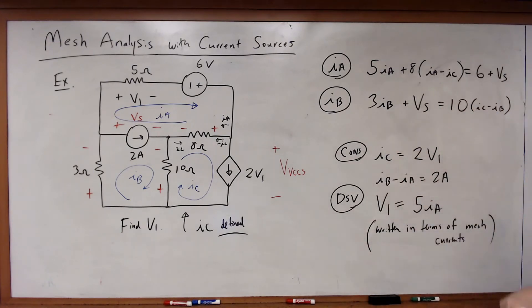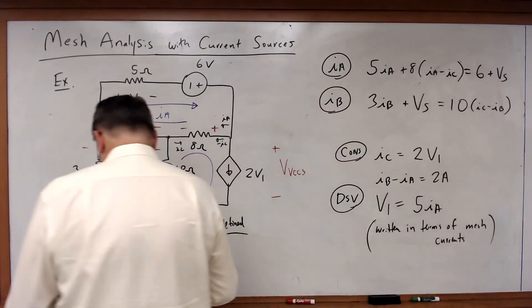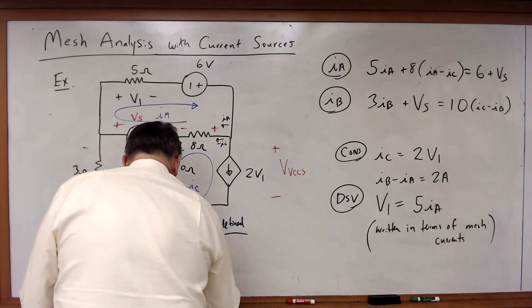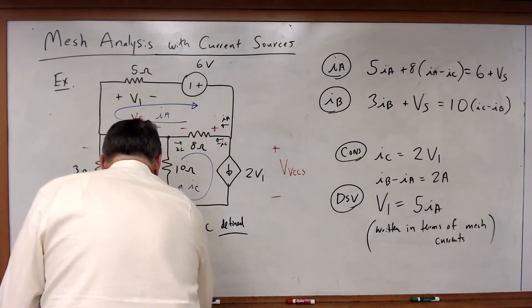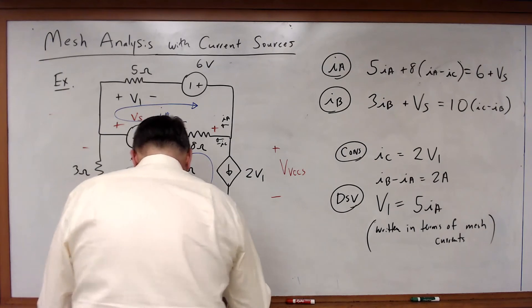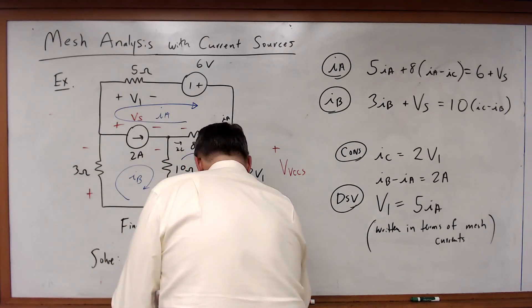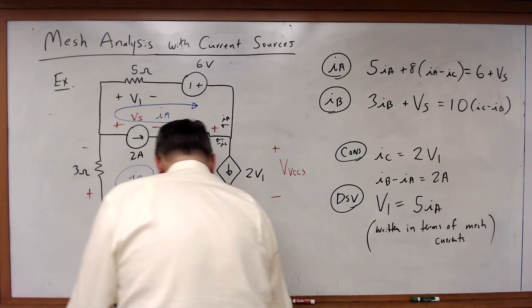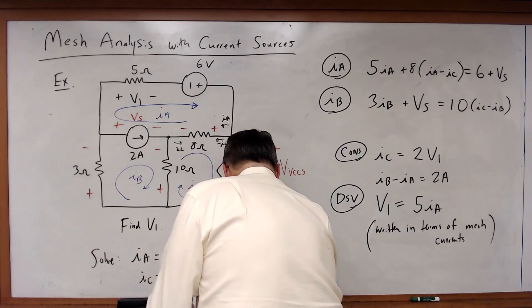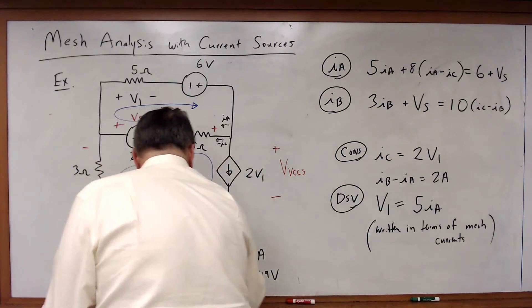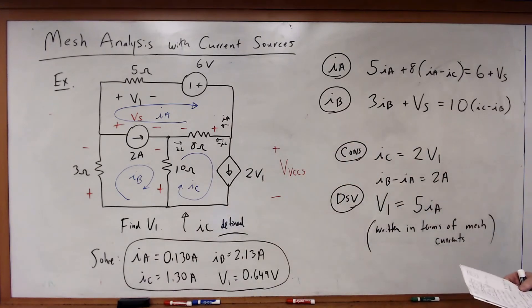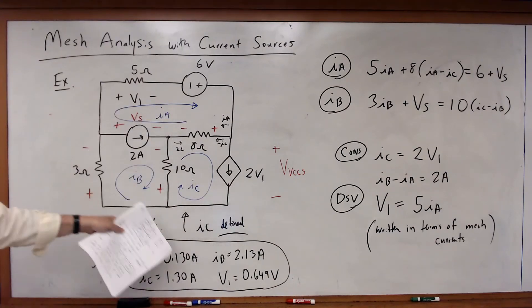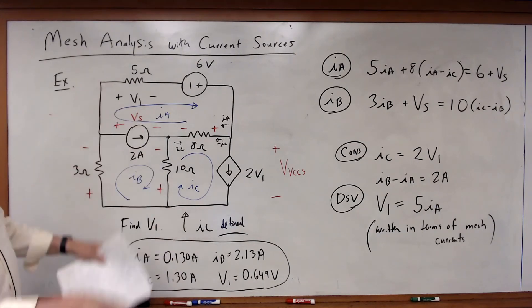Five equations, five unknowns — now I can solve. The results are: IA equals 0.130 amps, IB equals 2.13 amps, IC equals 1.30 amps, and V1 equals 0.649 volts. There's my solution. I wanted to find V1 when I started this problem, and there's my answer for V1 plus all the mesh currents, which means I can find any other voltage I want.